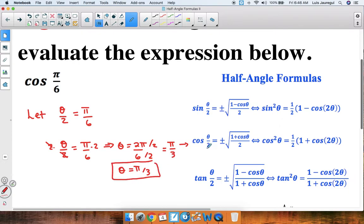Now before moving on to evaluate cosine of pi over 6, we need to ask ourselves a question. Is this going to be the positive or the negative square root? To figure that out, we ask ourselves the following. On which quadrant is the angle pi over 6?